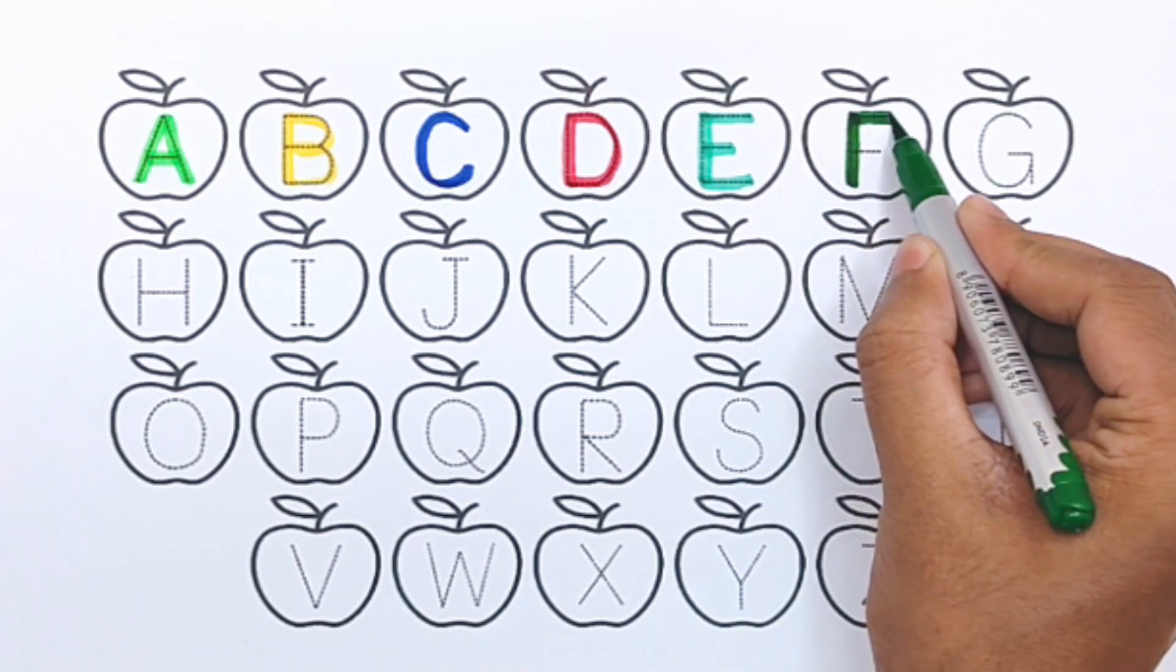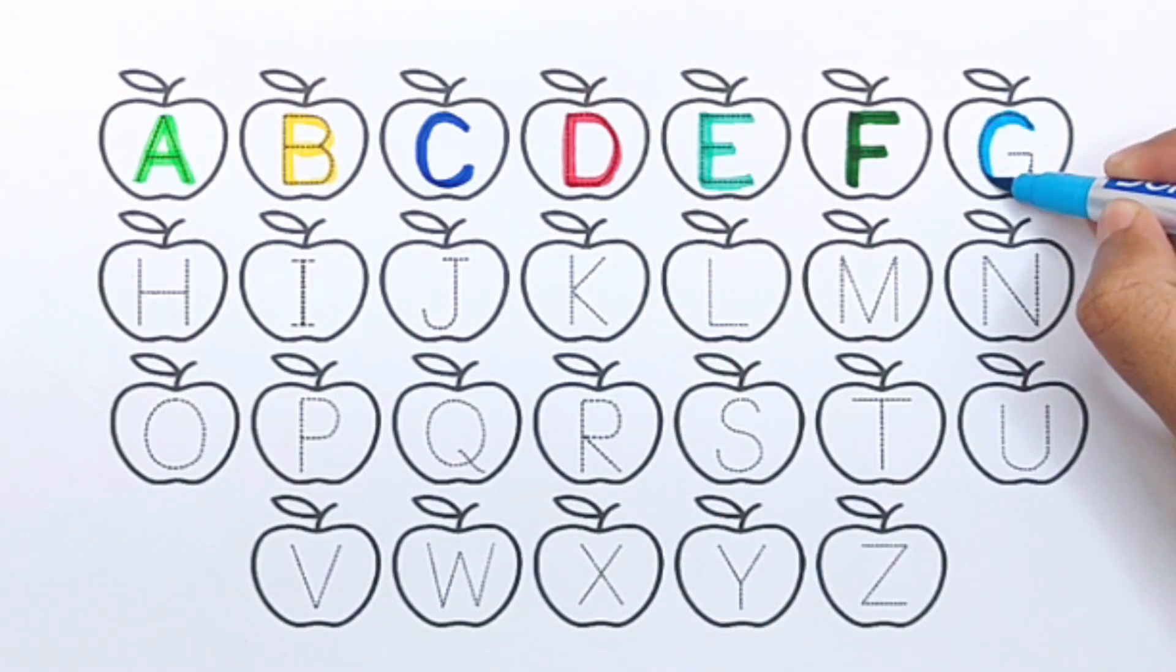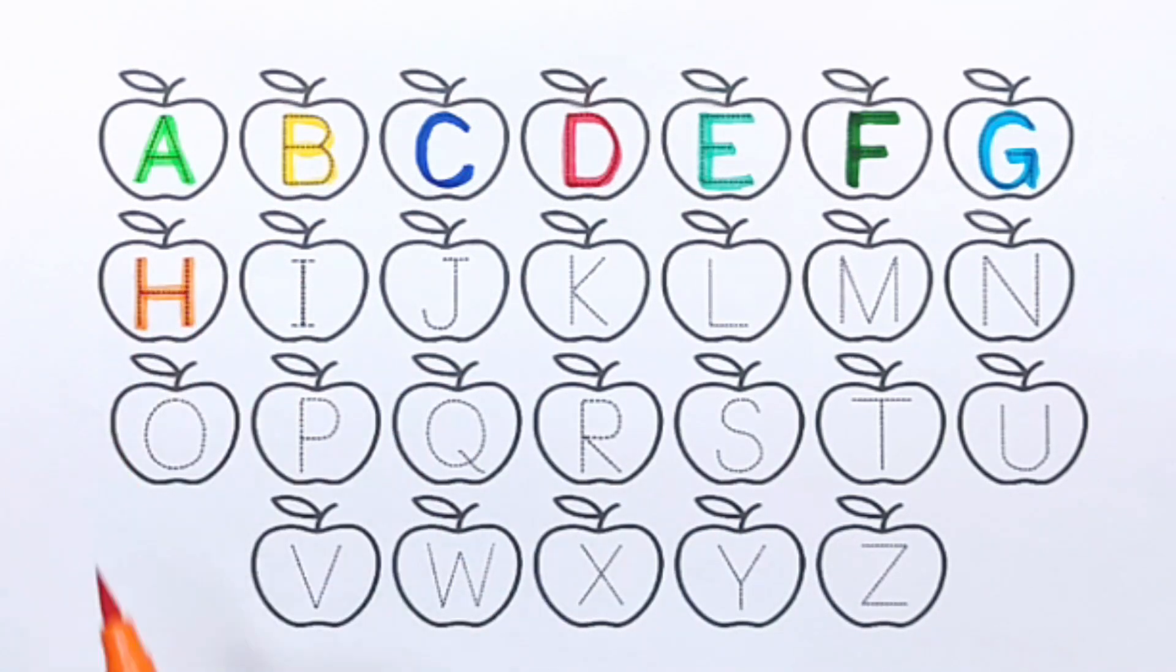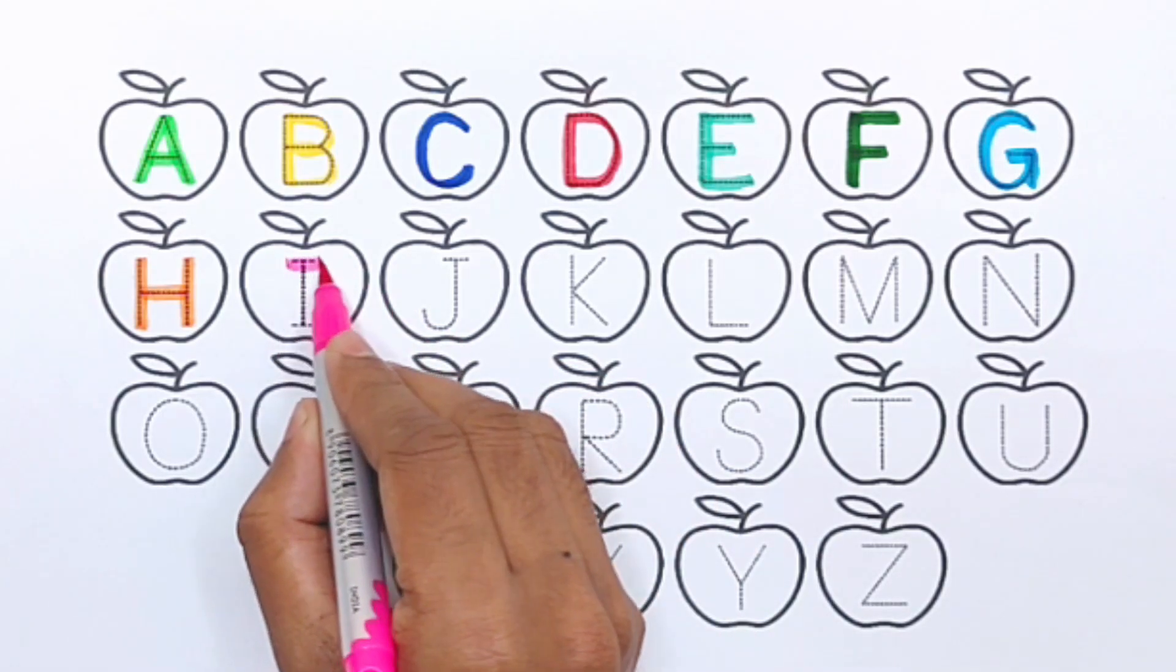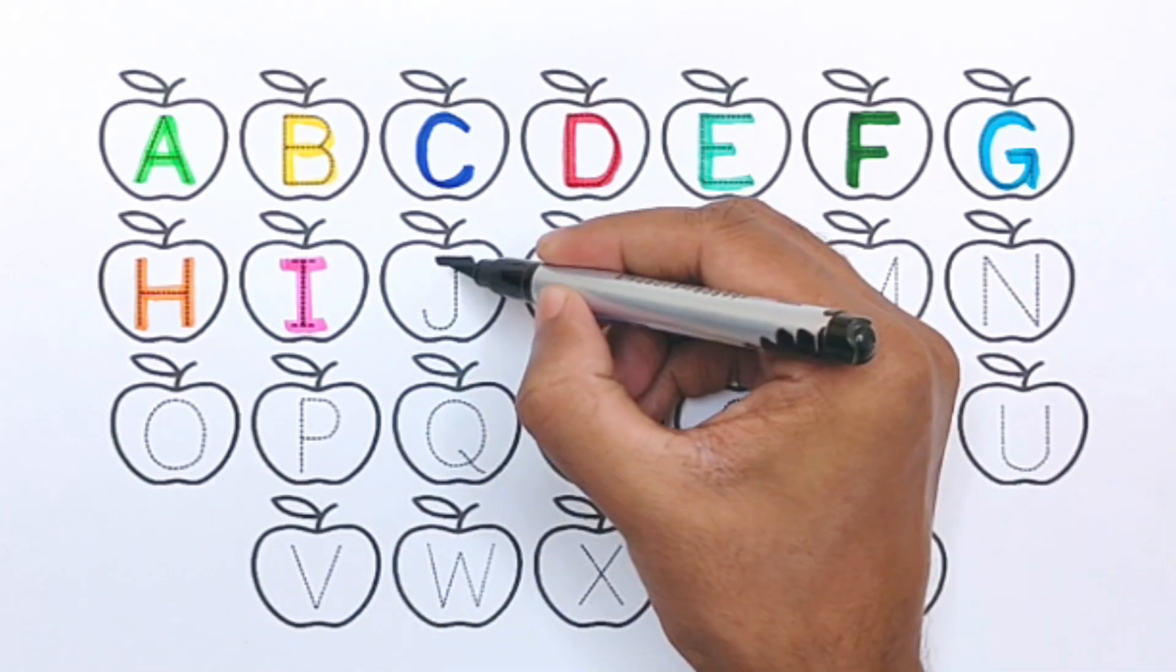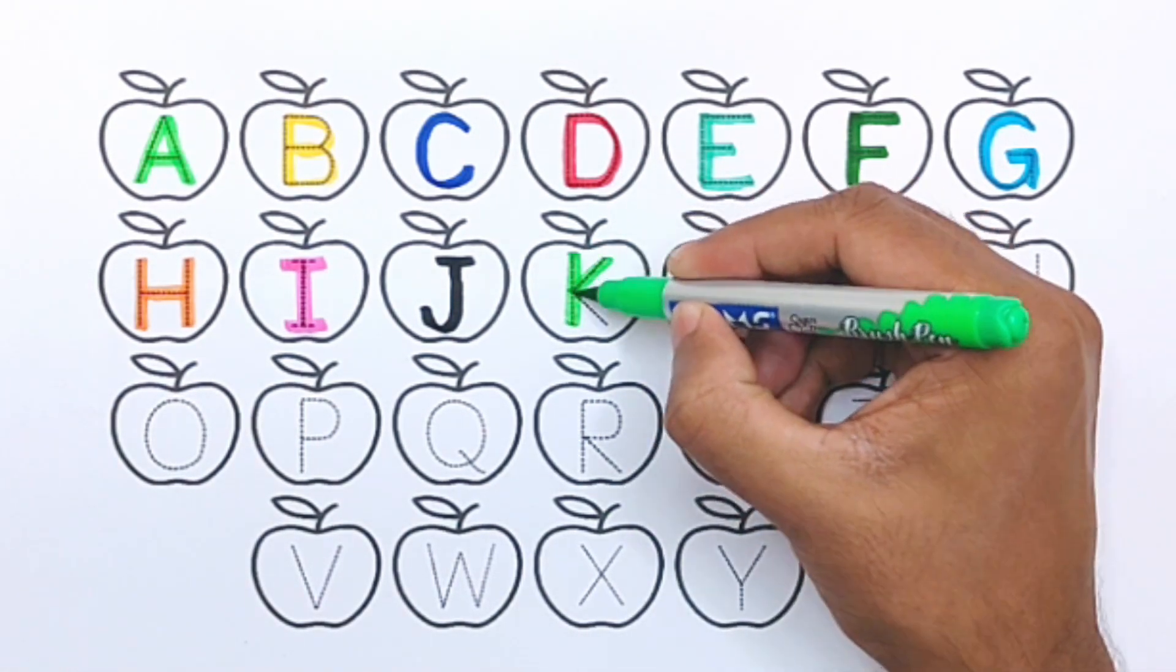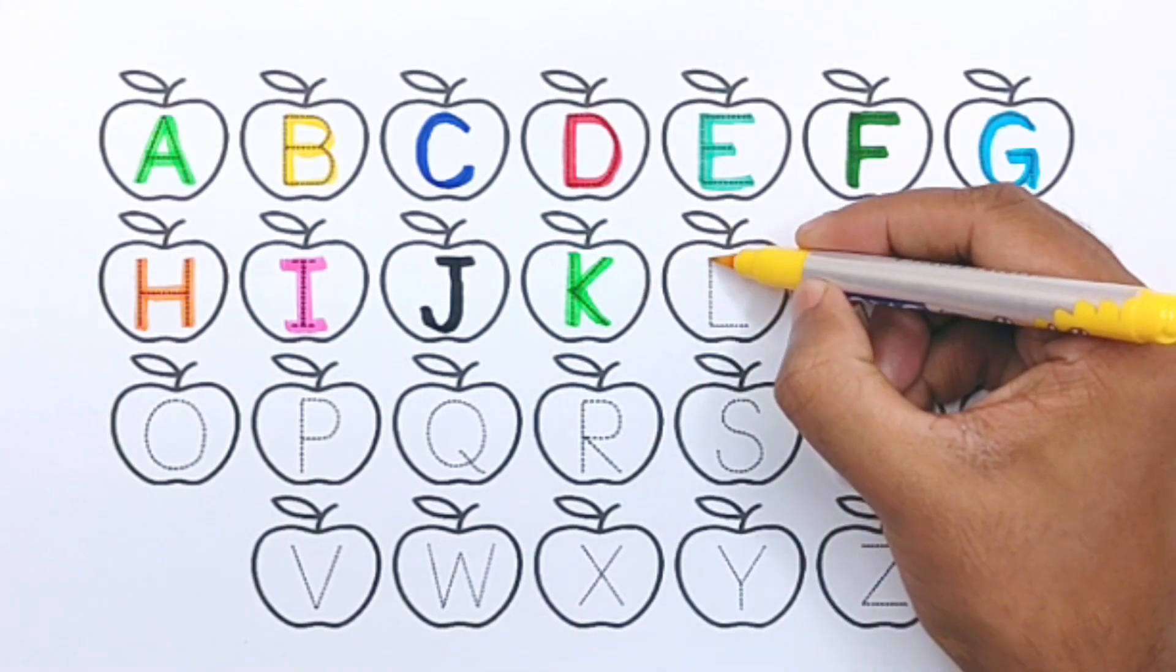Sky blue color. G, G for grapes. Orange color. H, H for hand. Pink color. I, I for ice cream. Black color. J, J for juice. Light green color. K, K for kite. Yellow color. L, L for lollipop.